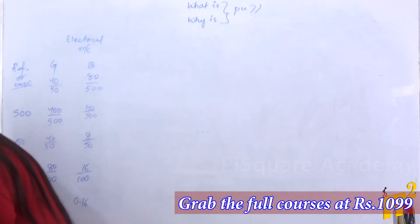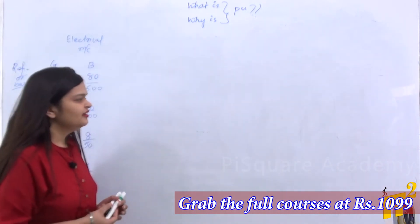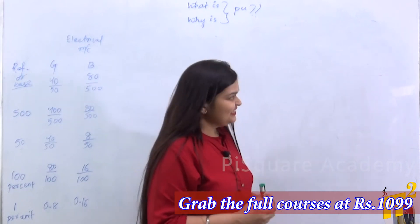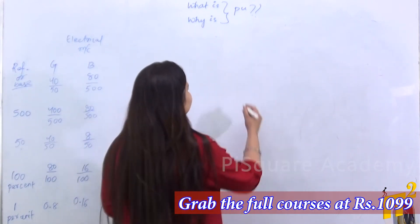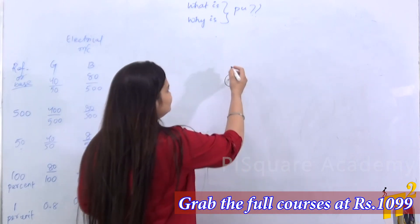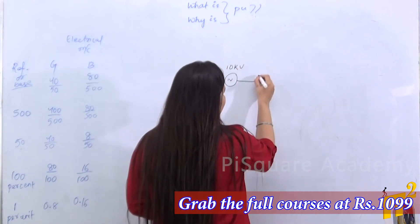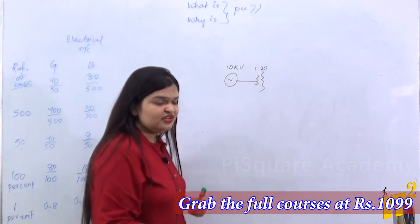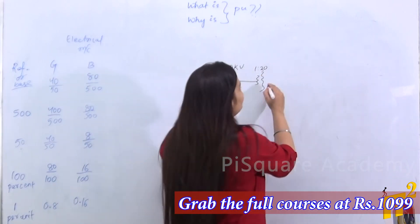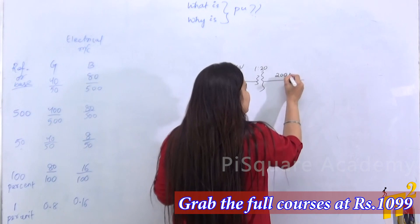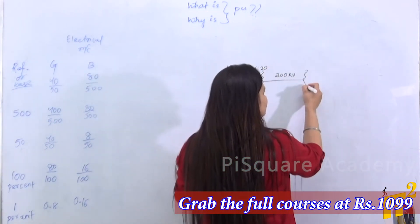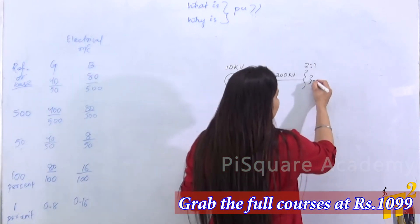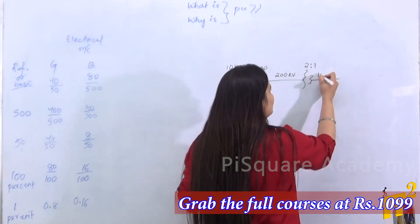Now, why is per unit considered in case of power systems? Let us take a power system network where the source is 10 kV. I'm using a step-up transformer with a ratio of 1:20, stepping the 10 kV up to 200 kV. Then suppose there is a transformer stepping down by a ratio of 2:1 — or half — so 200 kV becomes 100 kV.